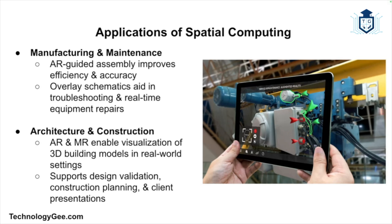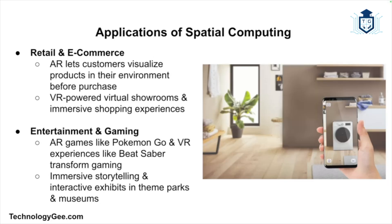Workers can receive real-time instructions and overlay schematics onto physical equipment for efficient troubleshooting and repairs. In architecture and construction, architects and builders use AR and MR to visualize and manipulate 3D models of buildings in the real world, aiding in design validation, construction planning, and client presentations.